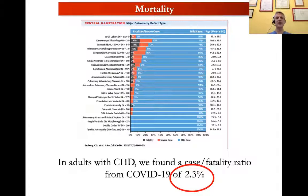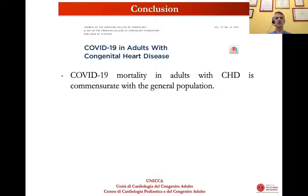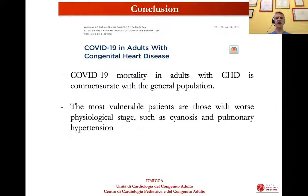The case fatality ratio from COVID-19 was 2.3% — the same as in the general population. But looking at specific conditions, Eisenmenger physiology, cyanotic physiology, and patients with pulmonary arterial hypertension are the most affected. In conclusion from this paper: the morbidity and mortality in patients — most of them, essentially all, in adult age — is commensurate with the general population. The most vulnerable patients are those with abnormal physiological stage, such as cyanosis and pulmonary hypertension, and anatomic complexity does not appear to predict infection severity.